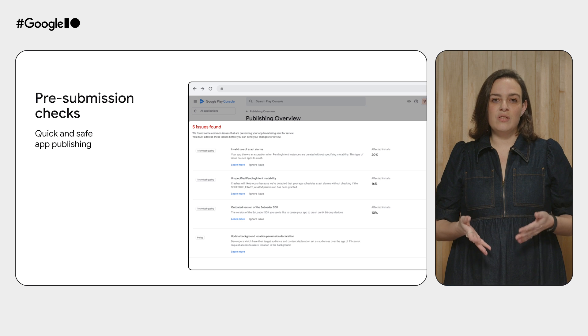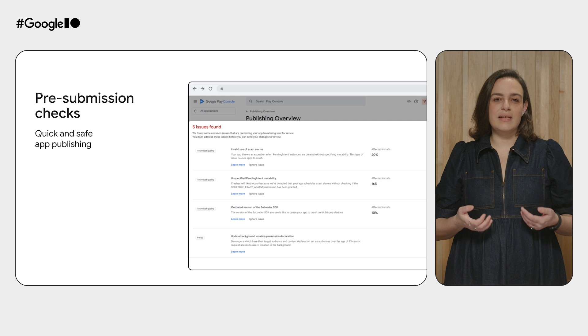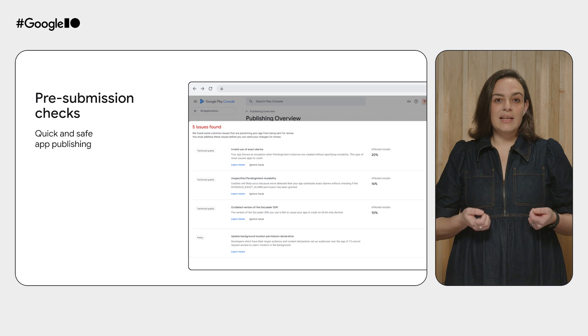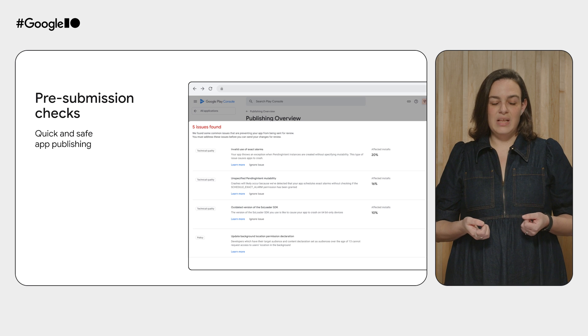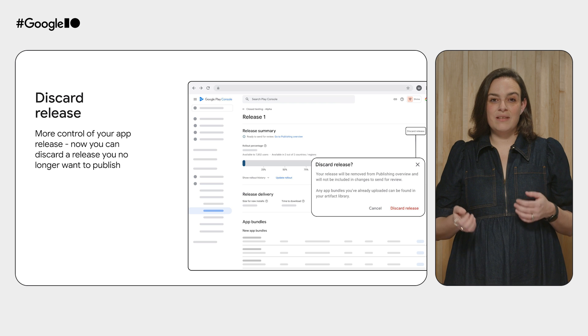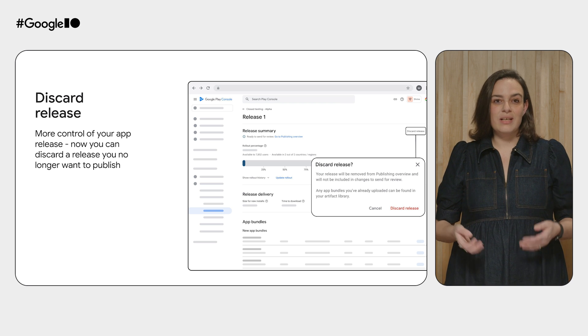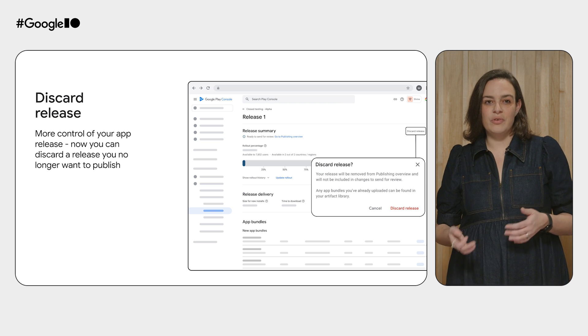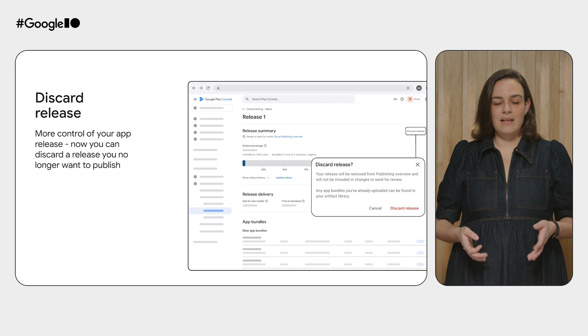We know that launching or updating your app is high stakes and important to get just right. With pre-submission checks, we will help you to publish quickly and safely by checking for common policy and app compatibility issues before you send the app for review, giving you critical feedback before you launch. We've also listened to your feedback — sometimes your plans change and you may need to discard a release more easily. This means if you decide you no longer want a release to be reviewed or published, you can easily cancel and remove your update, then publish it again later when ready.